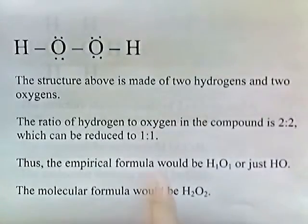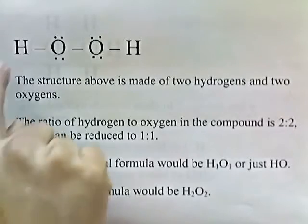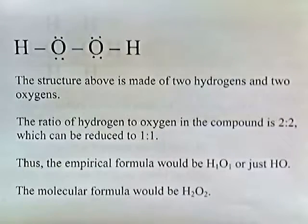Now let's take a look at this Lewis structure of hydrogen peroxide. This structure above is made of two hydrogens and two oxygens. The ratio of hydrogen to oxygen in the compound is two to two, which can be reduced to one to one. Thus, the empirical formula would be H1O1 or just HO. The molecular formula would be H2O2.